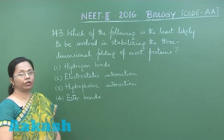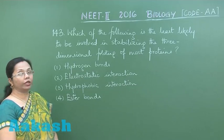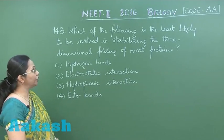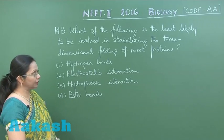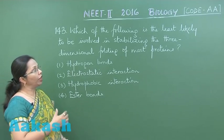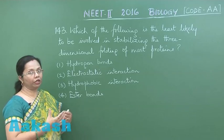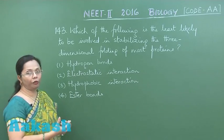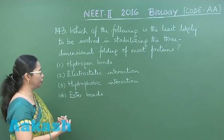Now this question number 143: which of the following is the least likely to be involved in stabilizing the three-dimensional folding of most proteins? By three-dimensional folding, the protein becomes globular, and during this formation there are a number of bonds formed.